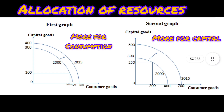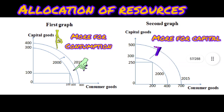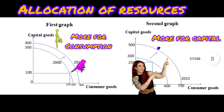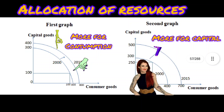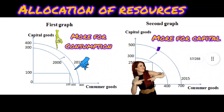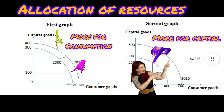The way an economy allocates resources between current consumption and future production is crucial for economic growth. If more resources are devoted to present consumption, fewer resources will be available for capital goods, limiting future growth. Conversely, when more resources are allocated to capital goods, growth is higher, shifting the PPF outward.